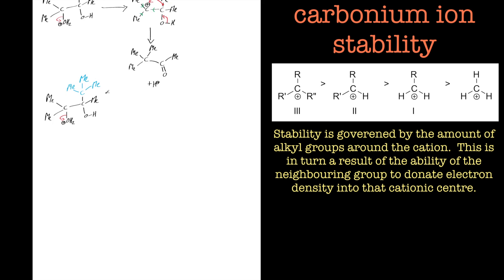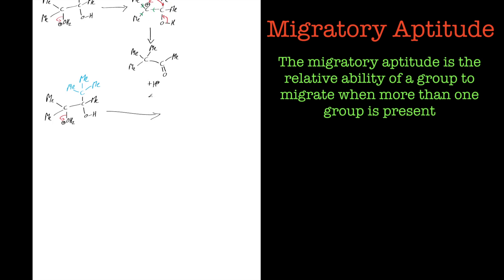Now we're going to have a look at the migratory aptitude, and that's basically which group will migrate during the pinnacle rearrangement, the 1,2-sigmatropic shift.